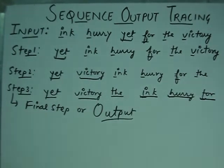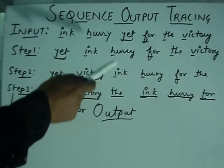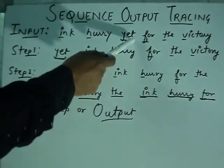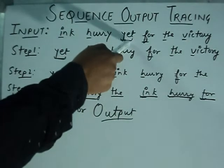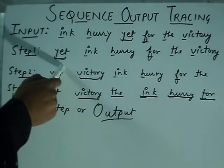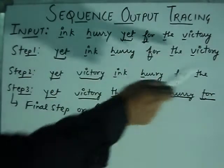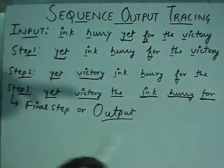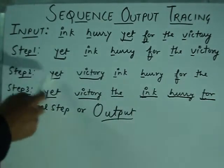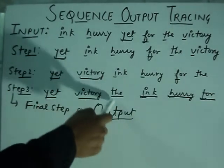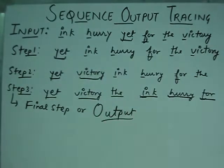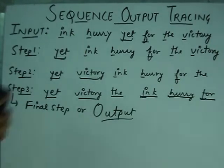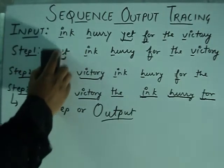In this pattern, we placed the later alphabetical word in the first place and accordingly shifted other words according to the later alphabetical order — like Y comes later so Y is placed first, then V, P, I, H, F. So this is our second type of sequence output tracing.